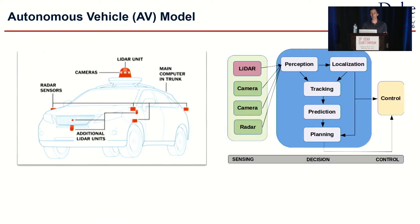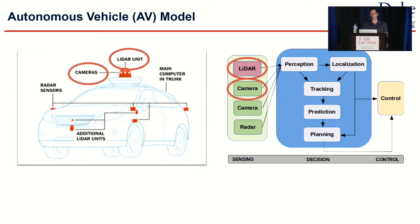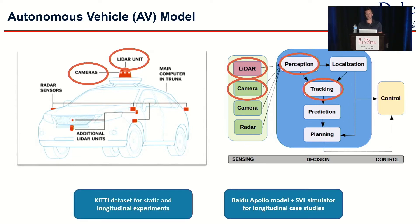Autonomous vehicles rely on a lot of different sensors, and sensor data is processed through a series of decision and control logic. In this work, we're going to focus on the LiDAR and camera sensors, as those are some of the most common sensors used in industry-level autonomous vehicles. In order to understand what's happening with that sensor data, we're going to look at the perception and tracking modules. For static evaluations and longitudinal case studies, we use the KITTI dataset, and later we use the Baidu Apollo model with the SVL simulator.